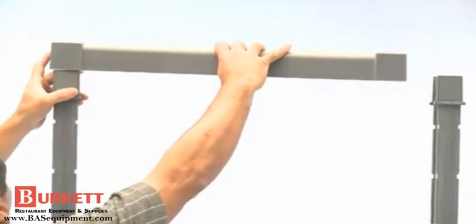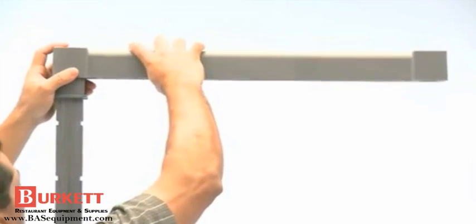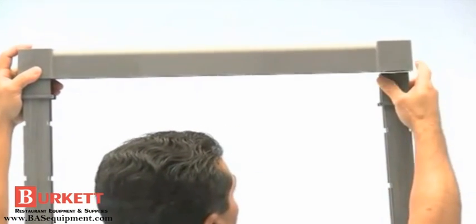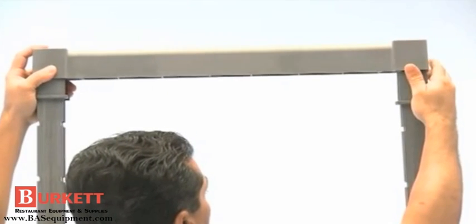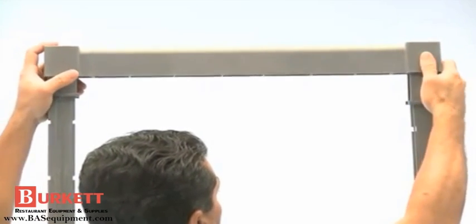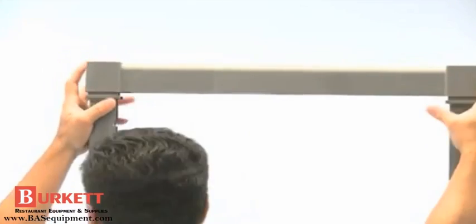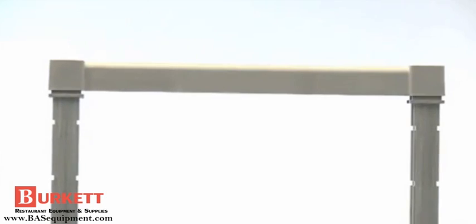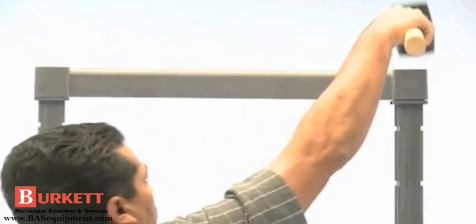Next, attach the top post connector to the posts over the wedges on each end. Using your rubber mallet, gently tap on each end until the top post connector is set into place. Do not tap on the center.